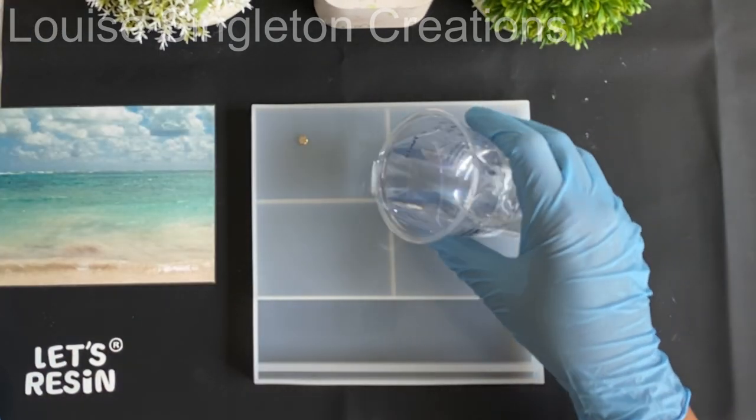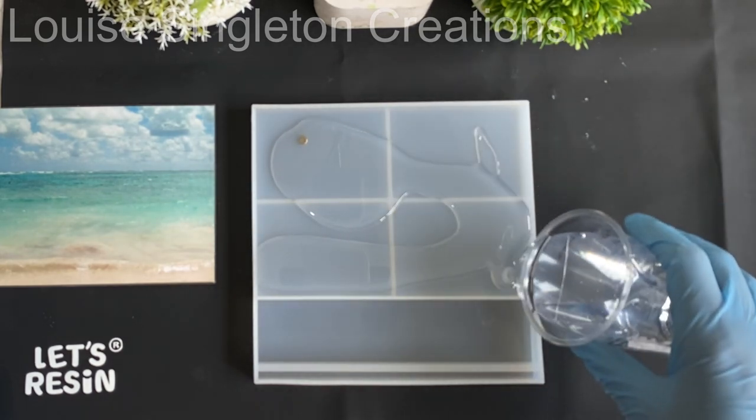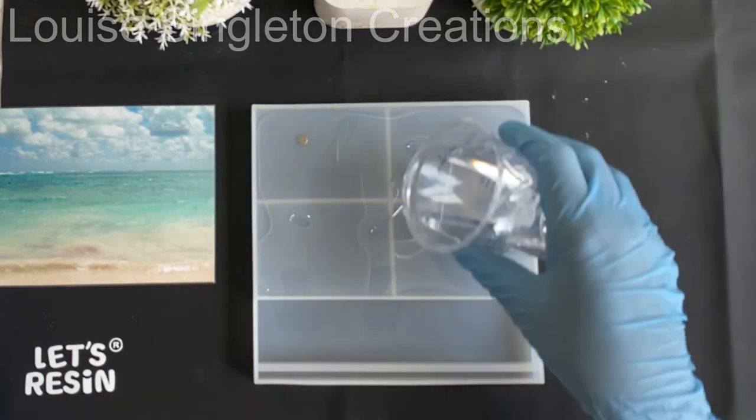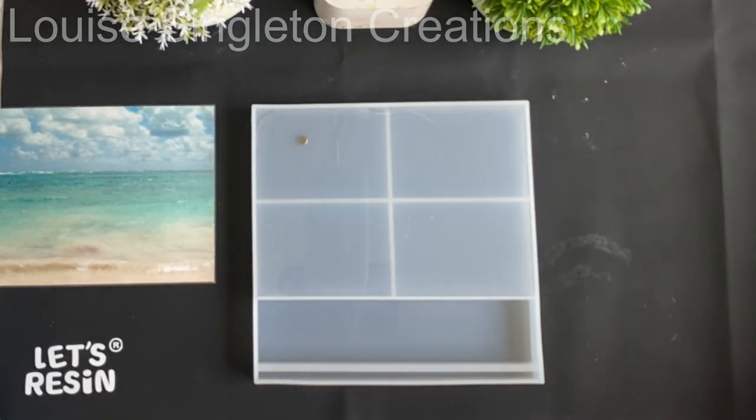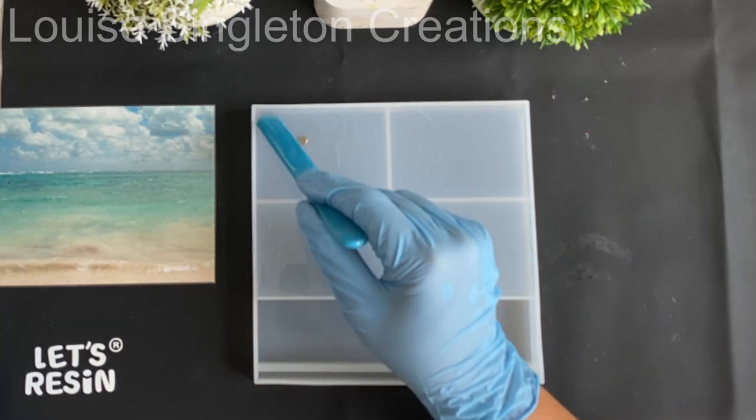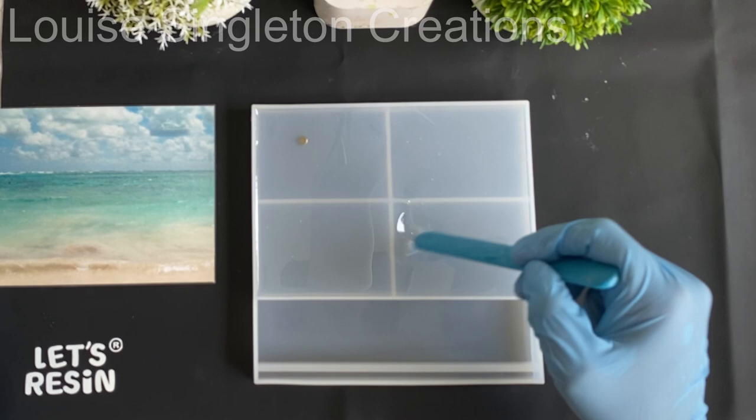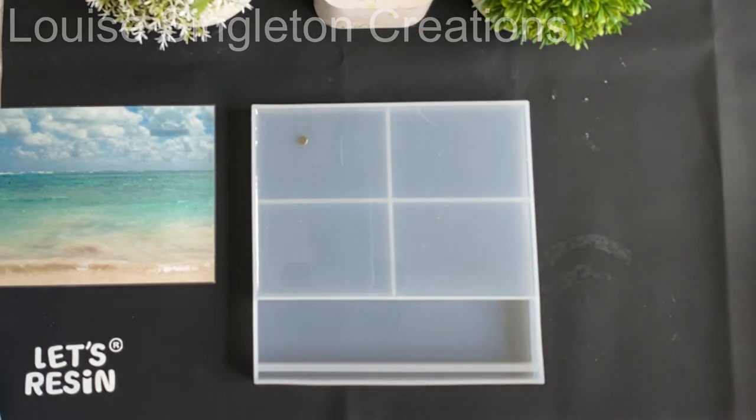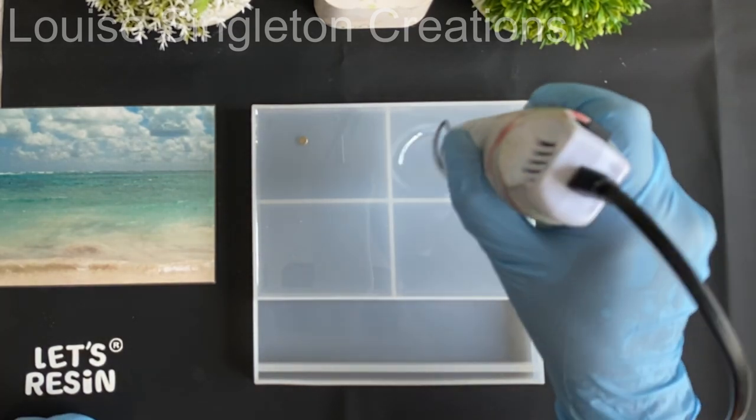Right then, it's time to add the resin. What I did was I put in just enough to cover the base of the mold and I moved it around with my stirring stick to make sure it was completely filled and there were no air pockets. Then I used my embossing heat gun just to gently remove any of the little air bubbles.